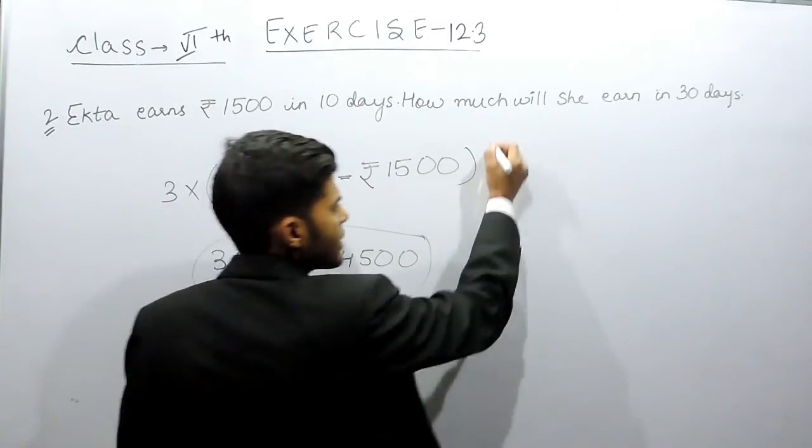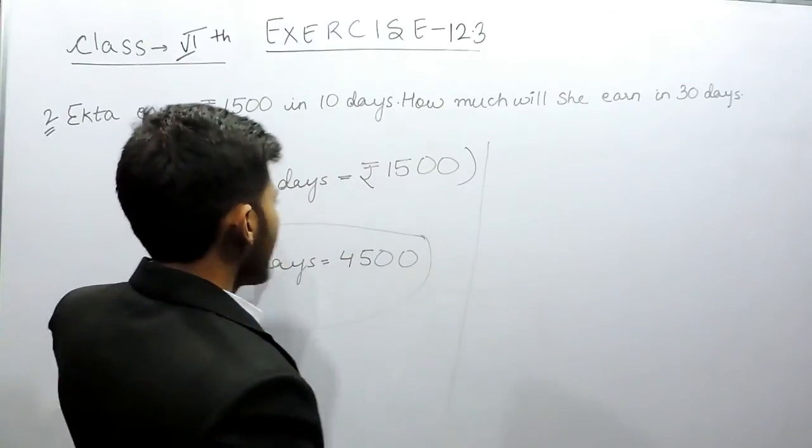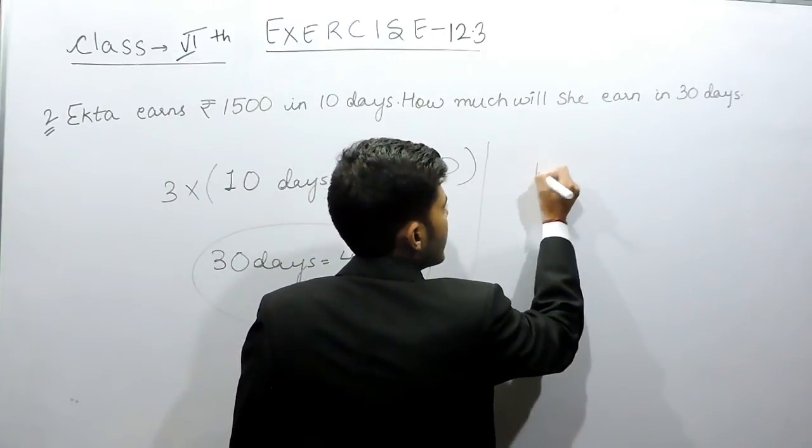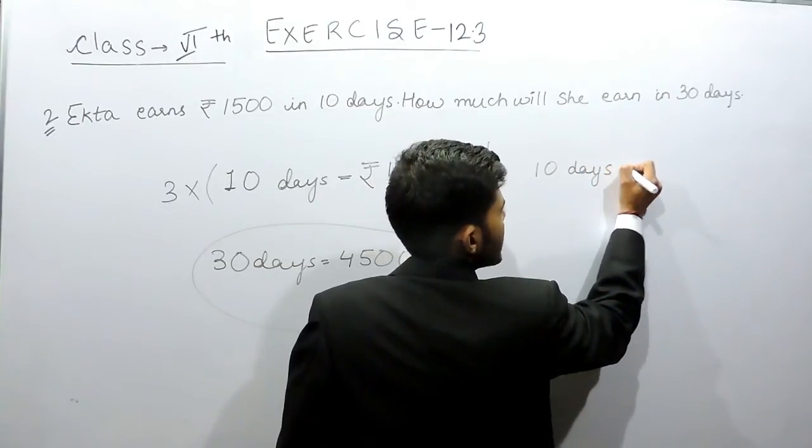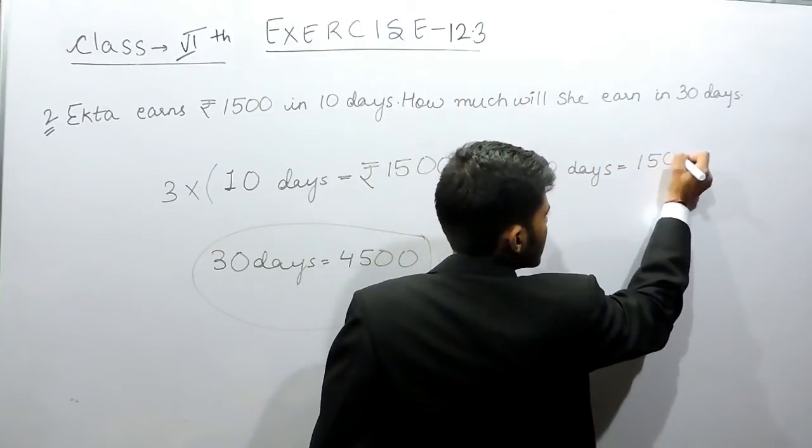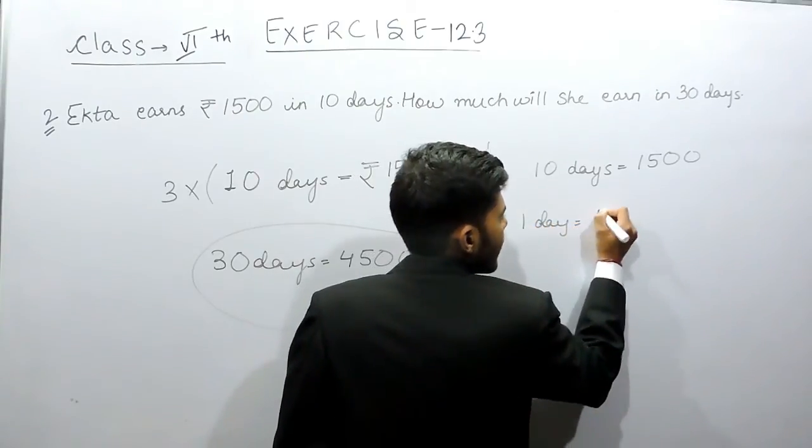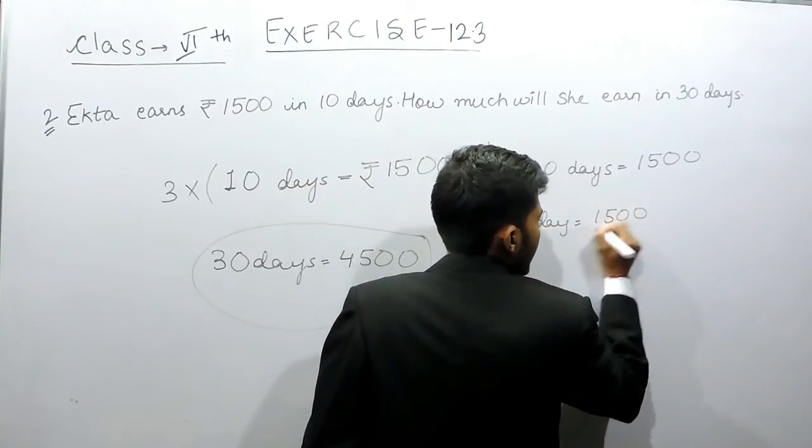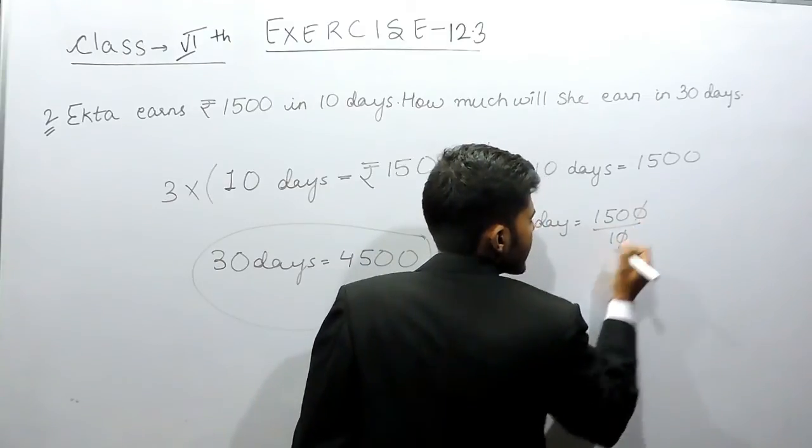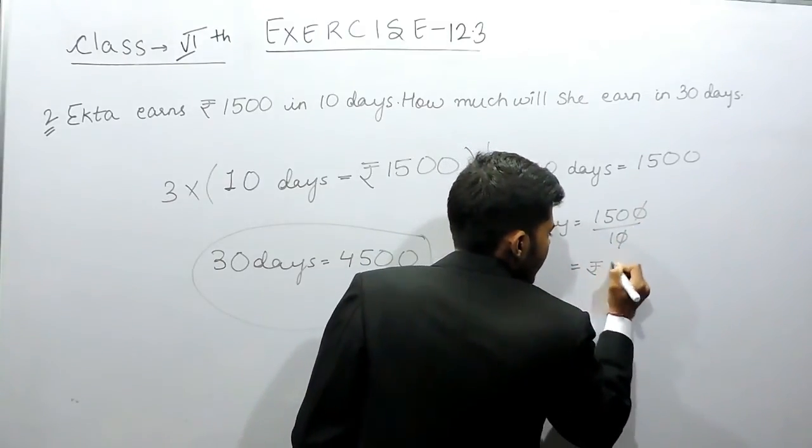The second method is: in 10 days she earns 1500 rupees. In one day she will earn 1500 divided by 10. This will be cancelled out to give 150 rupees.